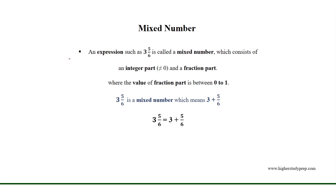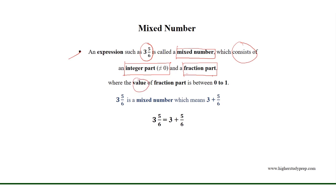Mixed number. An expression such as 3 and 5 over 6 is called a mixed number, which consists of an integer part (which is not equal to 0) and a fraction part, where the value of the fraction part is between 0 and 1. 3 and 5 over 6 is a mixed number, which means 3 plus 5 over 6.